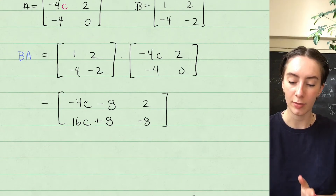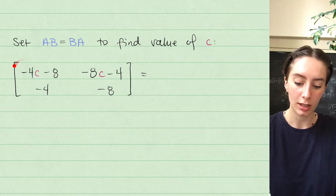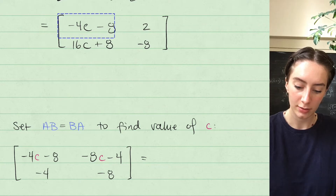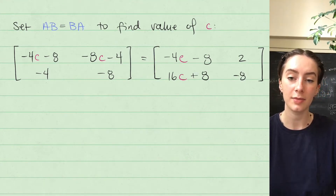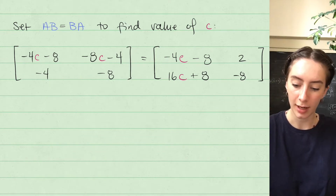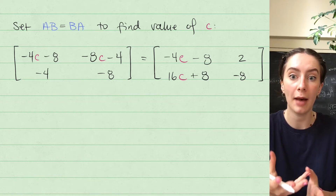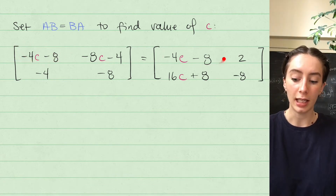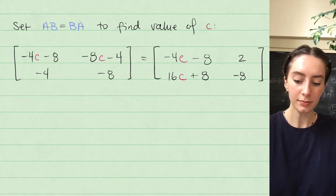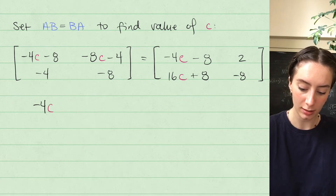The last step is to set matrix AB equal to matrix BA to find our value of C. If two matrices are equal, each of their corresponding entries must be equal. Looking at the top-left entry: negative 4C minus 8 equals negative 4C minus 8. This is true for any value of C, so it doesn't tell us anything about C.